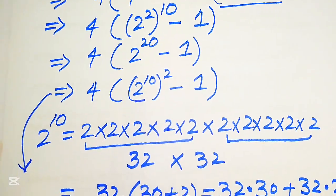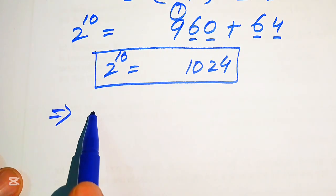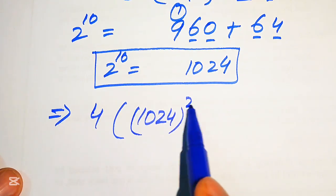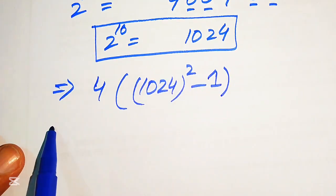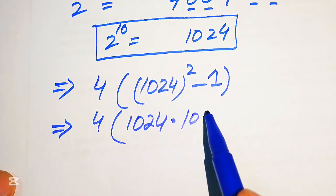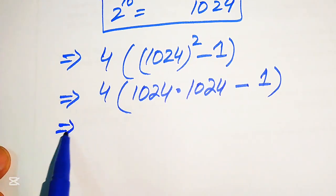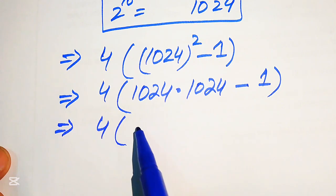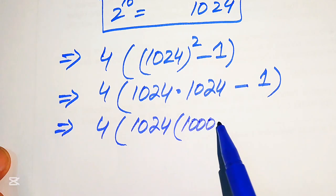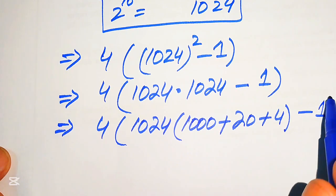We replace 2 to the power of 10 with 1024, so the expression becomes 4 multiplied by 1024 squared, minus 1. In the next step we expand 1024 squared as 1024 multiplied by 1024, minus 1. We rewrite 1024 as 1000 plus 20 plus 4.